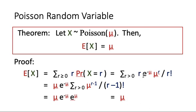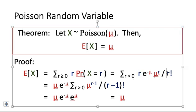We have the summation of r multiplied by e to the power minus mu, multiplied by mu to the power r, divided by r factorial, summed for all r greater than or equal to 0. When r equals 0, the term contributes 0, so we sum from r greater than 0. In that case, r can be cancelled with the r term inside r factorial. So we move e to the power minus mu and a copy of mu outside, getting mu times e to the power minus mu, with r minus 1 factorial in the denominator and mu to the power r minus 1 as the numerator.